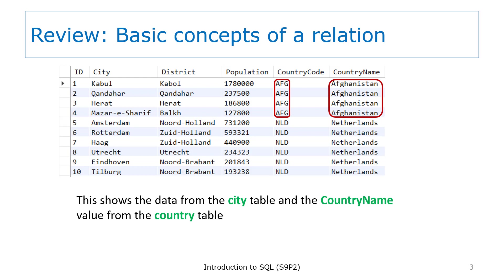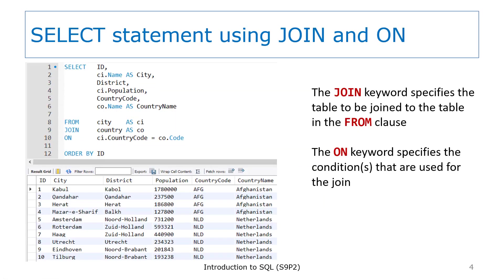Recall that both tables have a country code column. Here is a select statement we can use to join the data from the country table with the city table. Let's start with the parts of the statement that should be familiar — those include the select and its column list, the from keyword and clause, and the order by clause. What is new in this statement are the join and on keywords and clauses. We'll be taking those clauses apart in the next few slides.